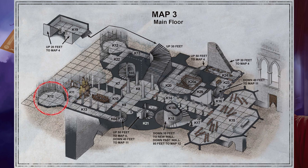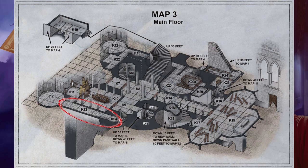Area K12 — The Turret Post: A high domed ceiling caps a thirty-foot-wide octagonal room. Frescoes faded with age adorn the ceiling but their images are impossible to make out. Tall, thin arrow slits, each two and a half feet tall and four inches wide, look out over the courtyard. Area K13 — The Turret Post Access Hall: This long, narrow corridor runs east to west. Cobwebs fill the hall, obstructing sight beyond a few feet.